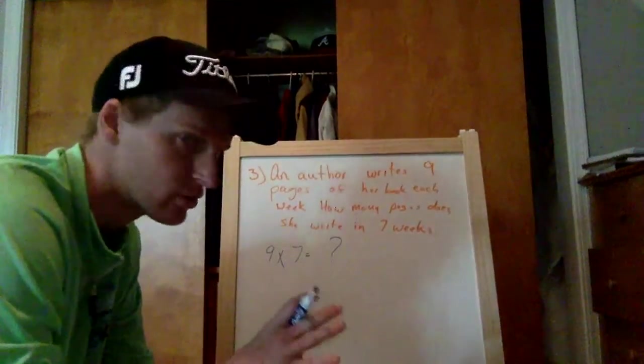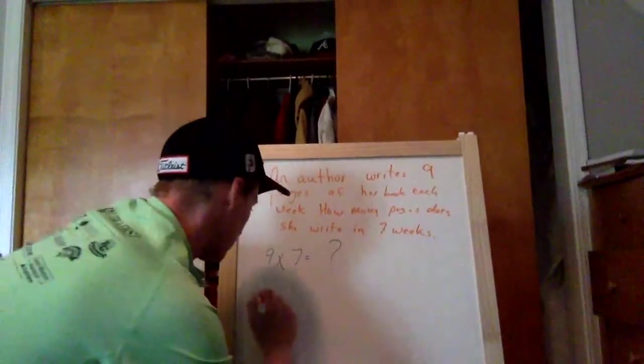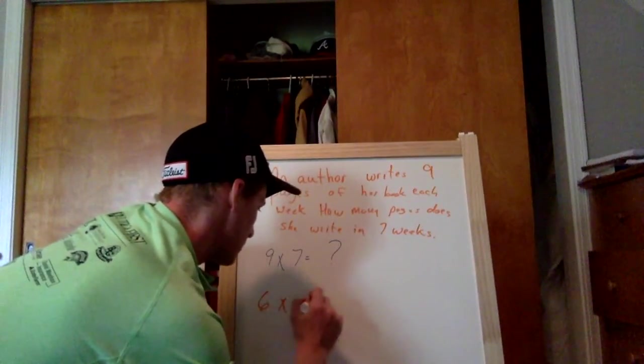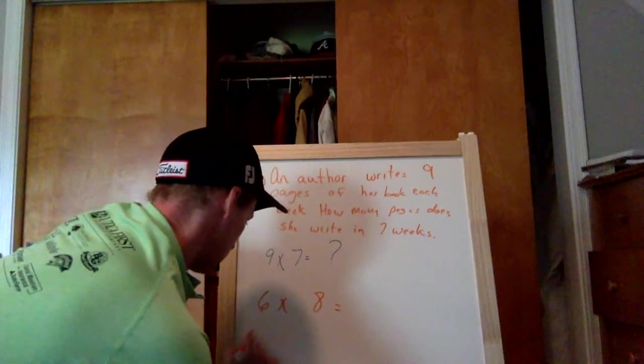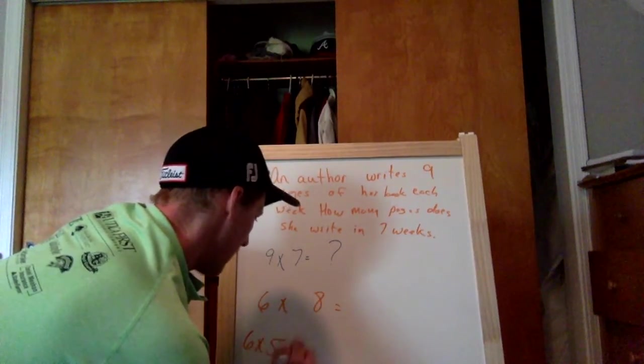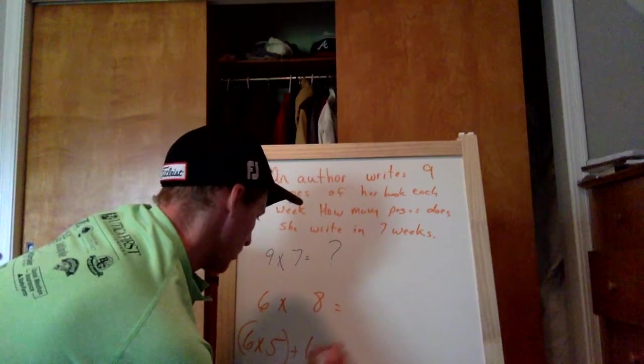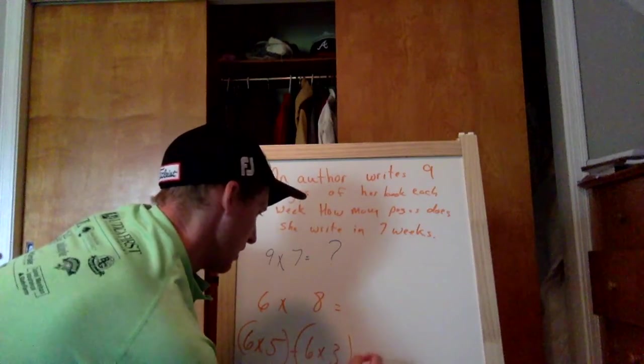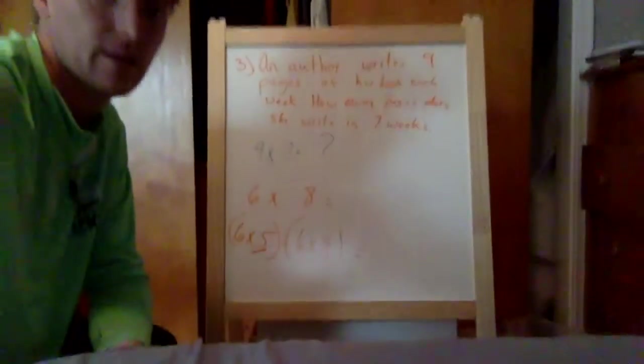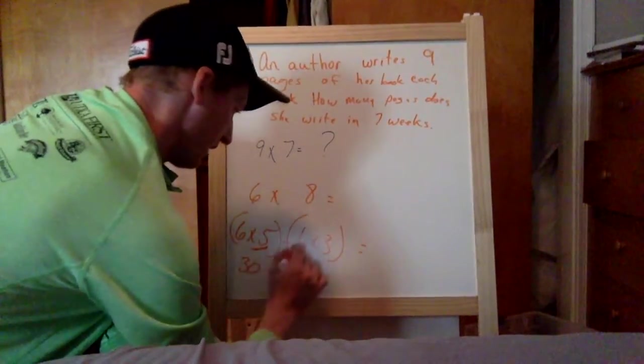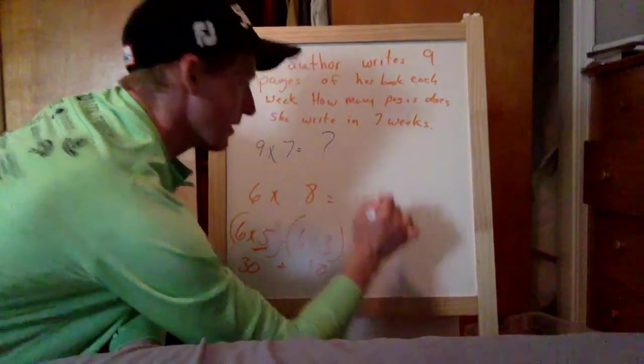You may remember that nine times seven, we used to break this down into two facts and then we'd add the answer. So what we used to do, do not write this, I'll write it in orange. What we used to do is if the answer was six times eight, we would go six times five plus six times three, and then you'd get those answers. This is when we used a fives facts. Six times five was thirty, and six times three was eighteen, and then you'd add them up and you'd get forty-eight.